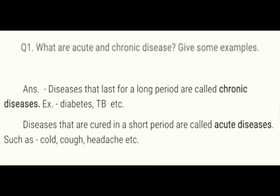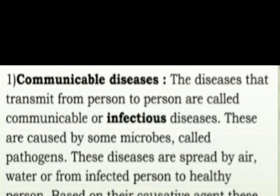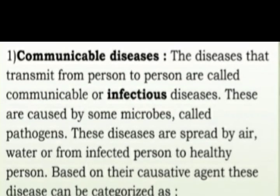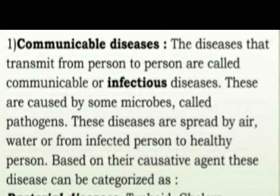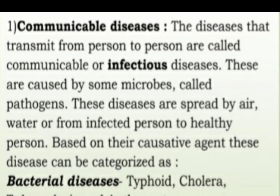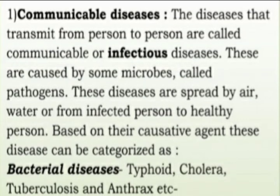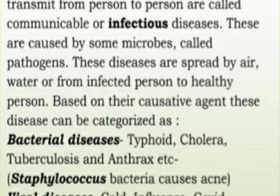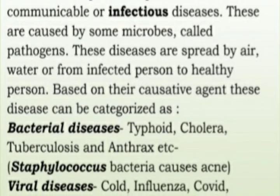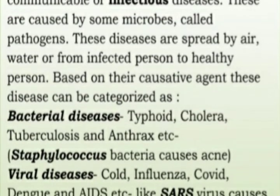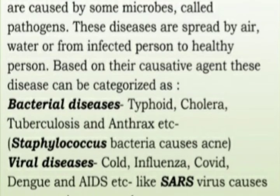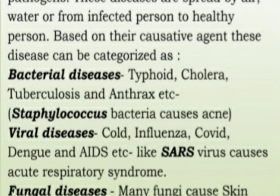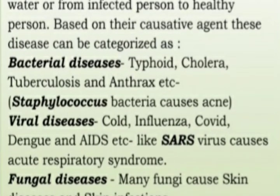Question 2: What are communicable diseases and how do they spread? Name some communicable diseases and their microbes. These diseases are caused by some microbes called pathogens and are spread by air, water, or from an infected person to a healthy person. Based on their causative agent, they are categorized as bacterial diseases such as typhoid and cholera.